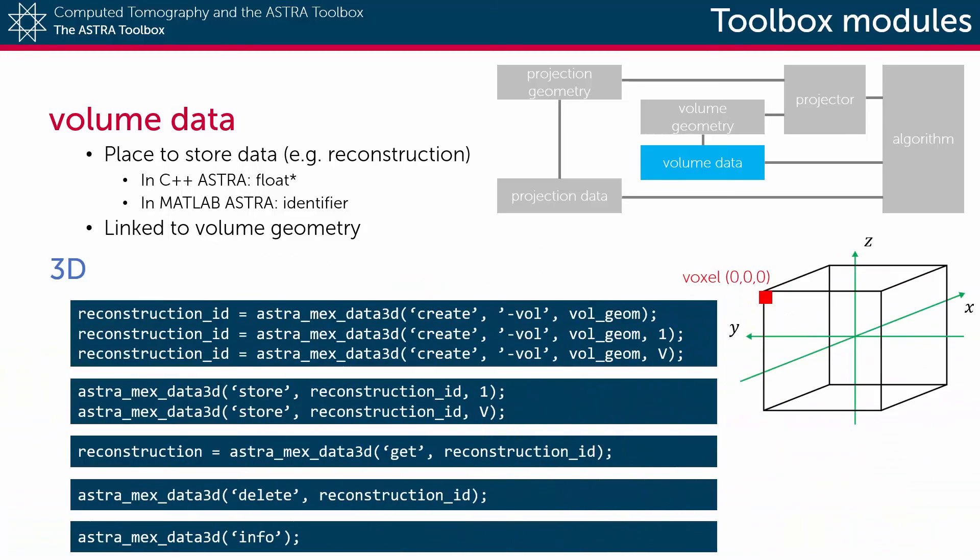For three-dimensional datasets the functionality is exactly the same as it is for two-dimensional datasets. The only difference is the name of the function which has now become astra_mex_data3d.